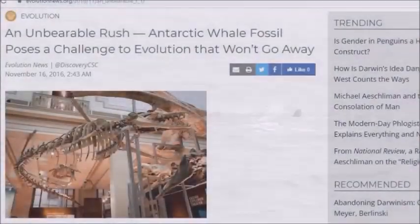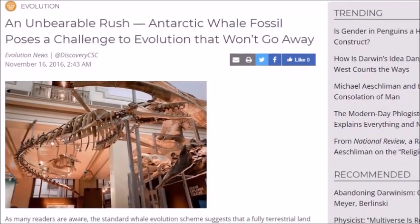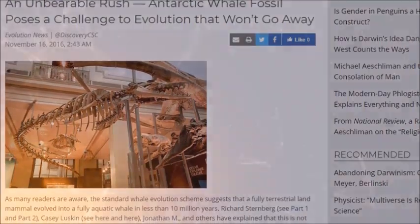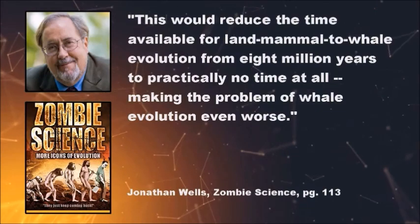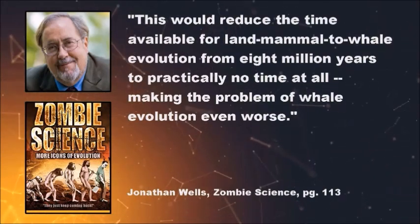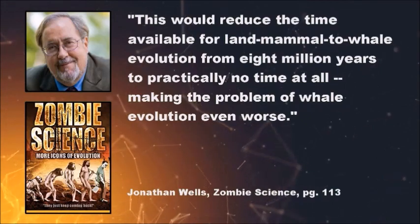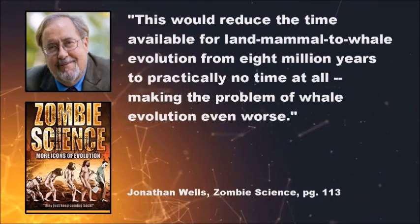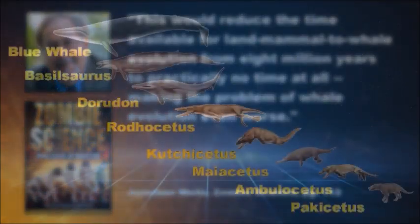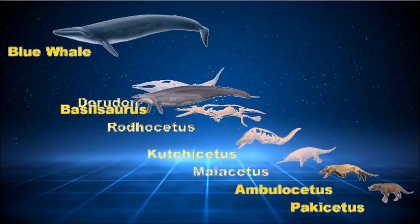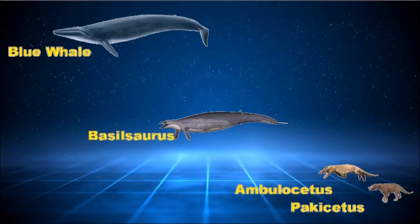Furthermore, in 2016, paleontologists discovered a fossil very similar to Basilsaurus, dated at 49 million years old. Jonathan Wells says: 'This would reduce the time available for land-mammal-to-whale evolution from 8 million years to practically no time at all, making the problem of whale evolution even worse.' Since this fossil is older than many of the fossils that supposedly led to modern whales, this means many of these fossils aren't ancestors of the modern whale at all. But then, where are the ancestors?